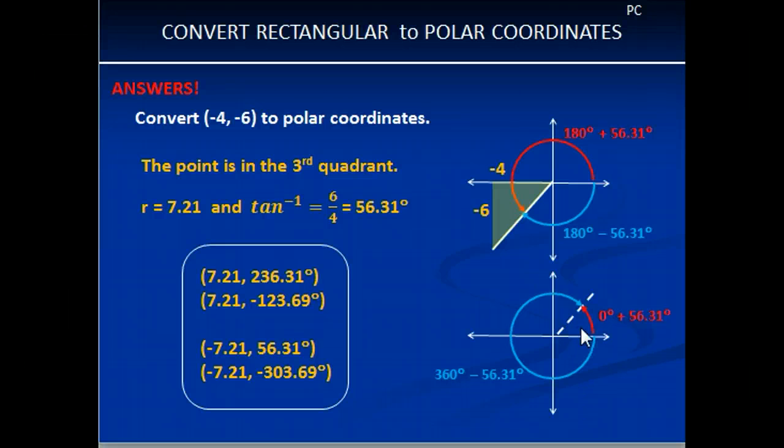And we're going to flip it over to do our negative 7.21, and have 0 plus 56.31. Don't forget, it's still the same theta. And we have to go all the way to the other side, going clockwise, and get our negative, which is going to be 360 minus 56.31. So here is the answer that you should have gotten. Negative 7.21 and 56.31 degrees, and -7.21 and -303.69 degrees.